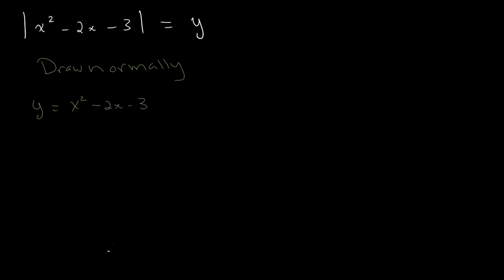We can factorize this. We'll get x squared plus x minus 3x minus 3. x times x plus 1 minus 3 times x plus 1. So x minus 3 times x plus 1 is equal to y.